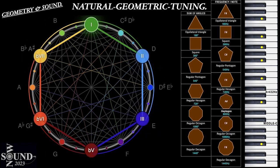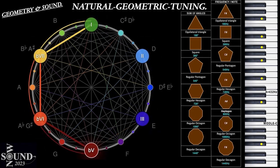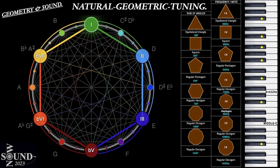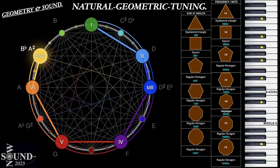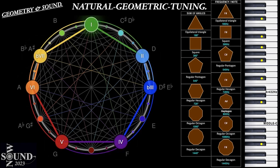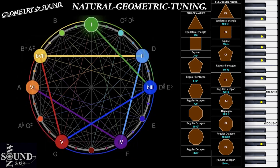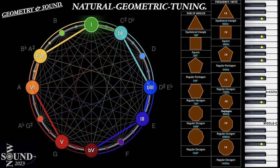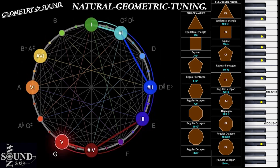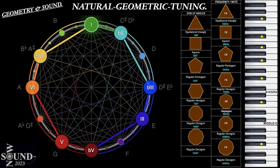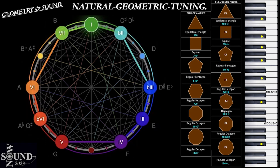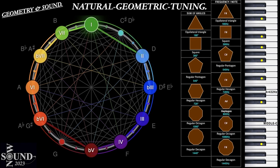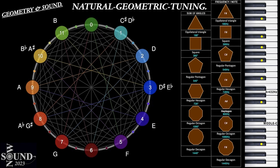Hexagons represent hexatonic scales such as the whole tone and minor half step. Heptagons represent heptatonic scales — the most commonly used scales and modes — and also tetrachords with upper structure triads. Octagons represent octatonic scales such as diminished scales and dense octachords. Larger polygons represent nonatonic, decatonic, and hendecatonic scales. The 12-sided dodecagon is the largest polygon in music and represents the full chromatic scale.